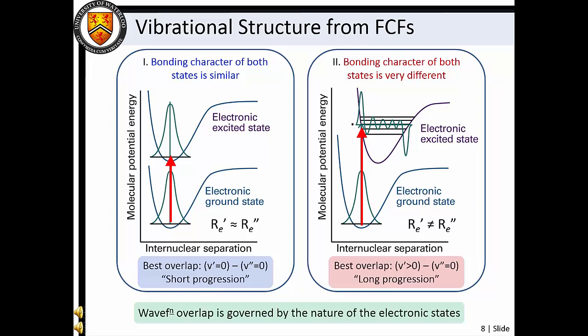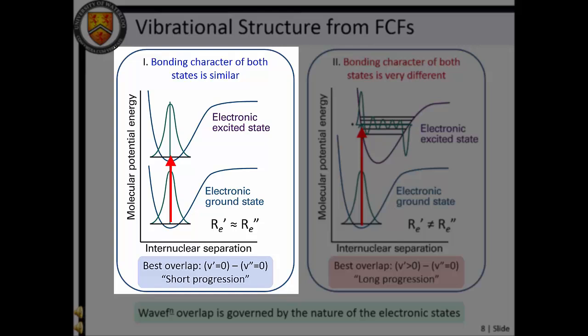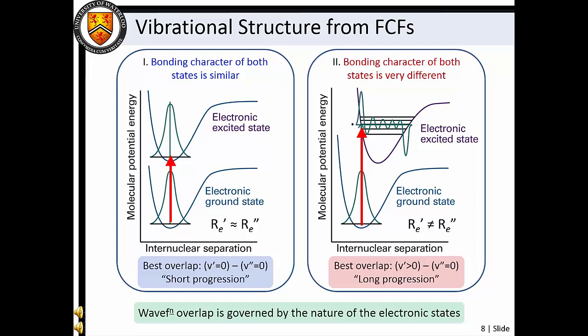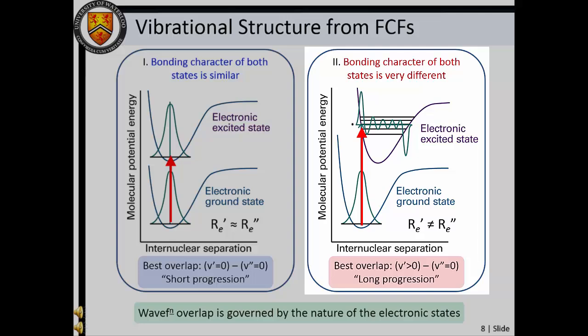Given this idea of vibrational wave function overlap, we can envision two scenarios for electronic transitions. Either the two states exhibit similar chemical bonding and are just offset energetically, or the two states exhibit different chemical bonding character and are offset both energetically and in terms of nuclear configuration. Assuming excitation from the V' equals zero level in the electronic ground state, the first scenario results in optimal wave function overlap with the V' equals zero level in the excited state, and very poor wave function overlap with any other excited vibrational level. This results in a so-called short progression, since as V' progresses to higher values, transition intensity decreases rapidly.